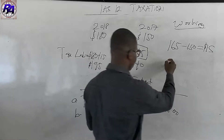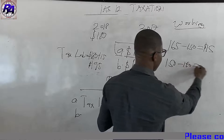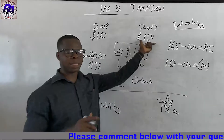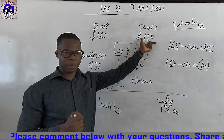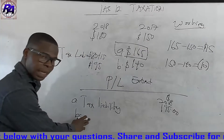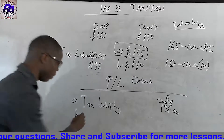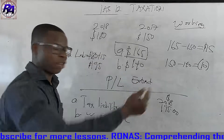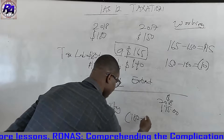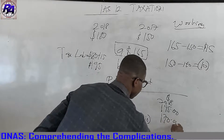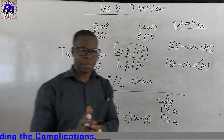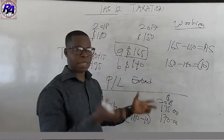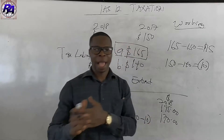The difference is $150 minus $140, which is $10. But this $10 is going to reduce our tax element because we made an over provision. So in 2018 under the second scenario, our tax liability is going to be $180 minus $10, which gives us $170. So please remember, under current tax, current tax always takes into consideration the adjustment of over provision and under provision.